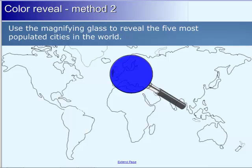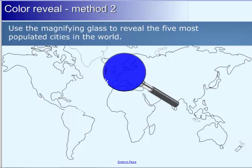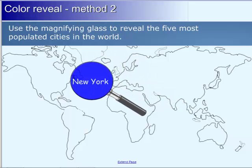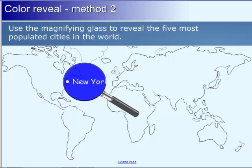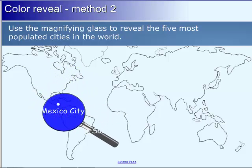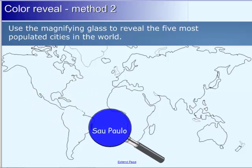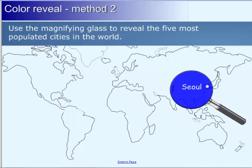Here's another example. This is a magnifying glass. The five most populated cities are typed in the same color as that map. As I move the magnifying glass around, because it's a darker color, as I pass it beneath the names of those cities, the contrasting colors allow it to be revealed. So I have New York, Mexico City, Sao Paulo, there's a number of these all over the map. This is an example from the Lesson Activity Toolkit.